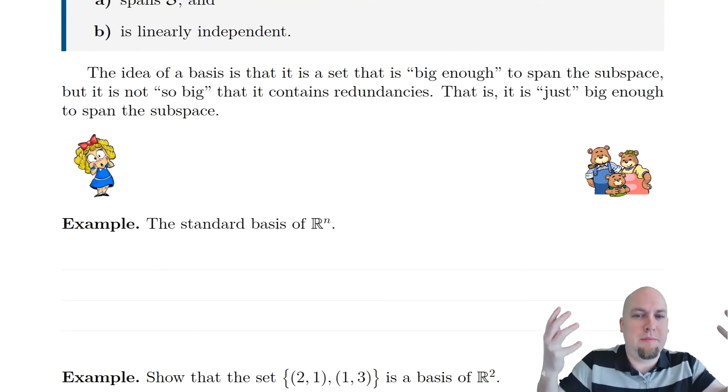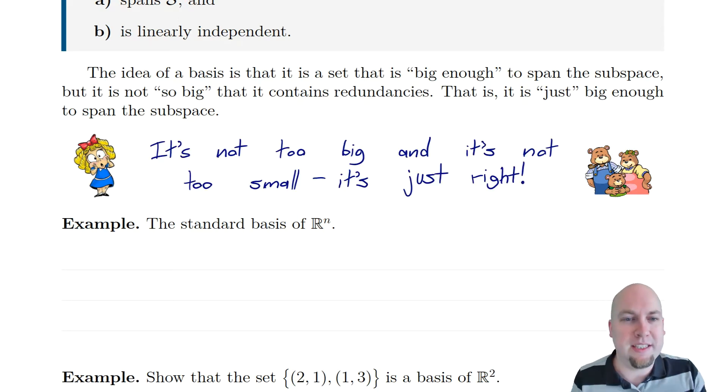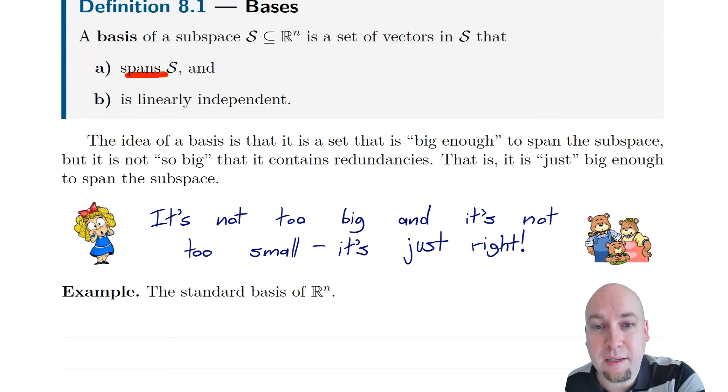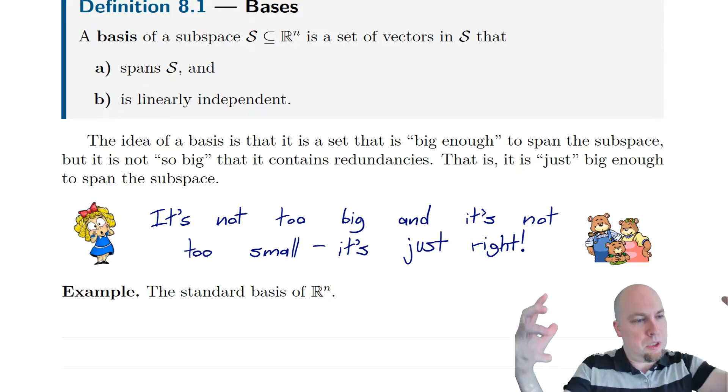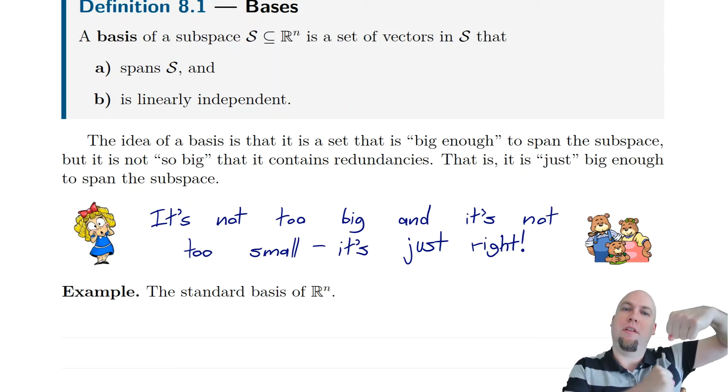One way to think about this is in terms of the Goldilocks and the Three Bears story. The basis, the thing that makes them perfect is they're not too big and they're not too small. They're just right. They're the perfect size to describe the subspace you're talking about. The fact that they span the entire subspace tells you they're big enough to describe everything in S, whereas the fact that they're linearly independent tells you they're small enough that there's no redundancies. It's this pull and push between these two properties that actually makes them useful.